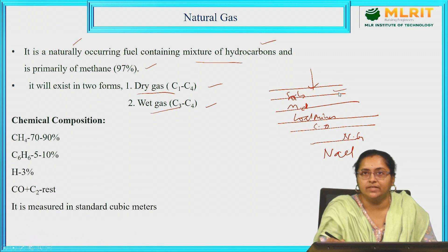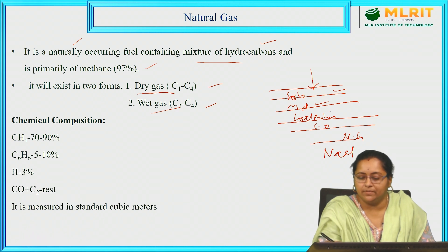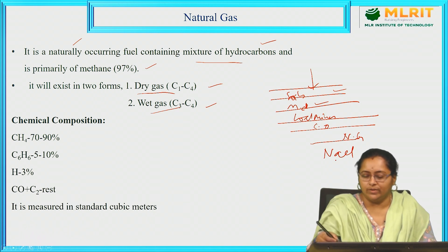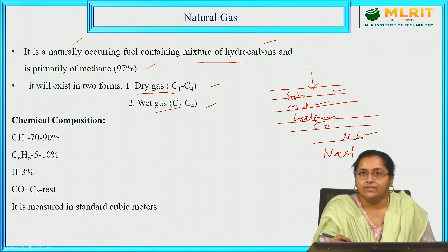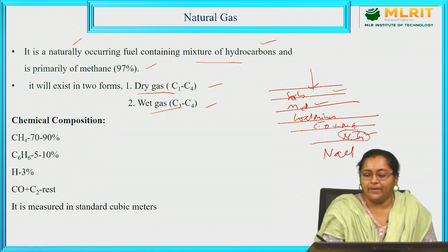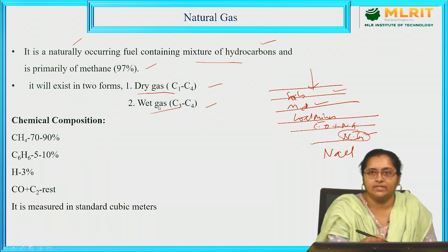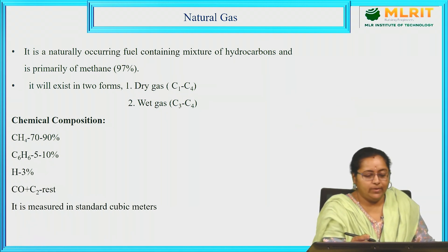The first layer is fertile sediments containing nitrogen, phosphorus, and potassium. The second layer is mineral deposits. Going very deep into the earth's core, the last but one layer is natural gas. Upon that we find crude oil. Sometimes natural gas is associated with crude oil — both exist in the same layer. Based on its presence in the earth's core, it exists in two different forms: dry gas and wet gas.